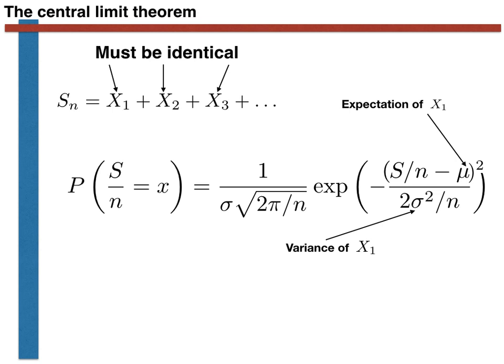You will thus notice that if we calculate a mean from n random variables with expectation mu and variance sigma squared, that the mean is essentially a sample from a normal distribution with expectation mu and variance sigma squared over n.